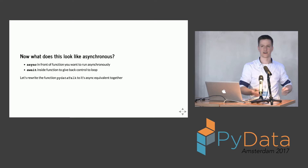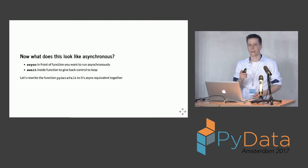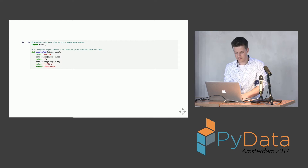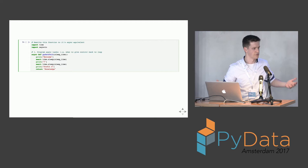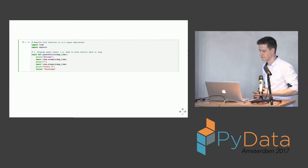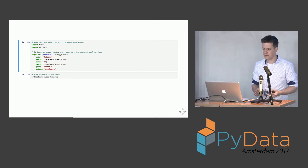Let's rewrite the PyData talk function to its asynchronous version. We need asyncio, and we have to tell Python this will be an asynchronous function by putting async there. At every point where we want to give back control to the loop — all those sleep statements where we're just waiting — we put await there. If we run this and call the function, what do you think will happen?